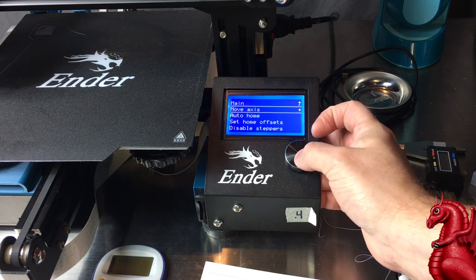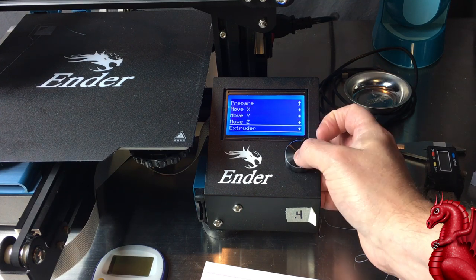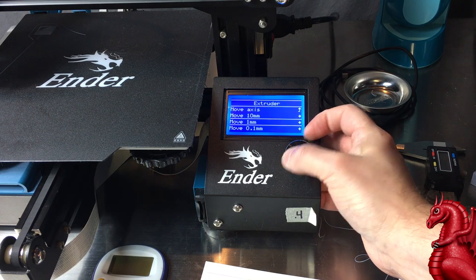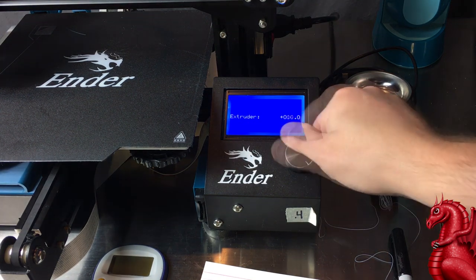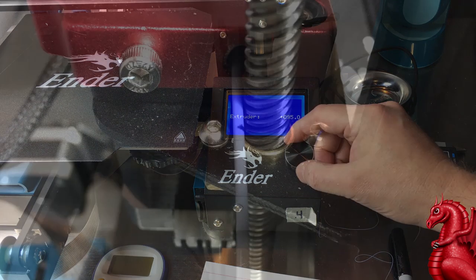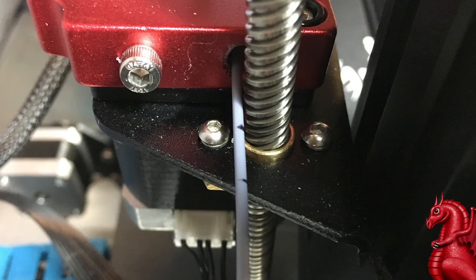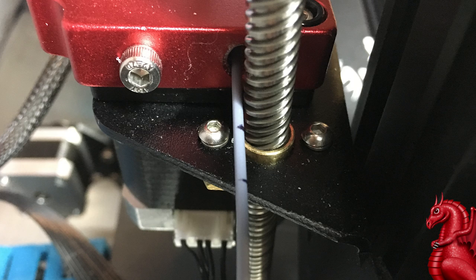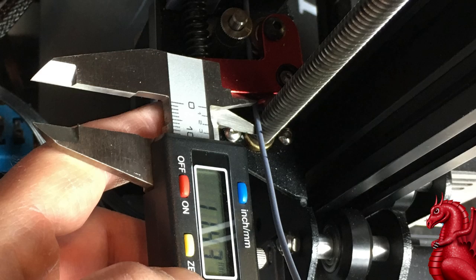Next step, we're going to go to the LCD menu, Move Axis, Extruder. Go down to one millimeter and crank it up to 100 and let it feed 100 millimeters through your system.